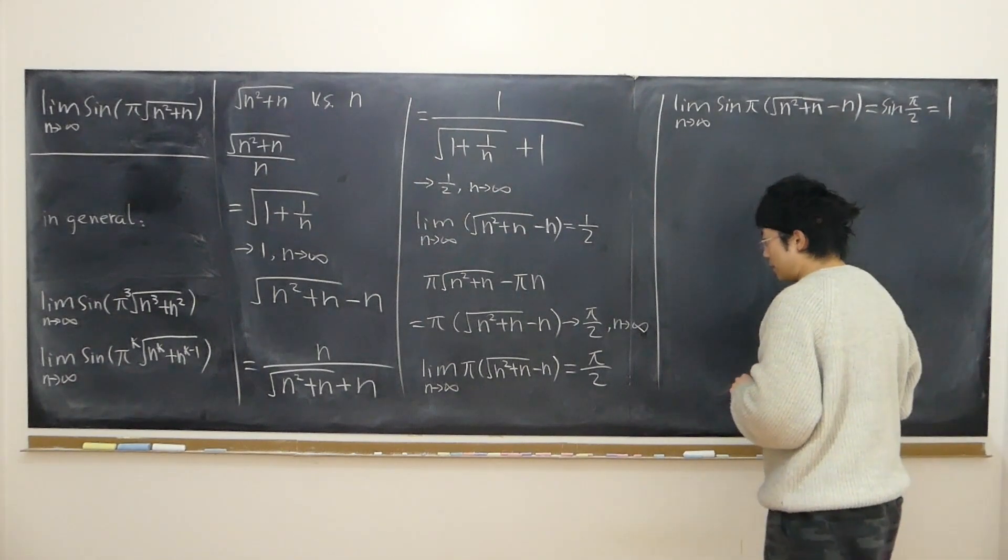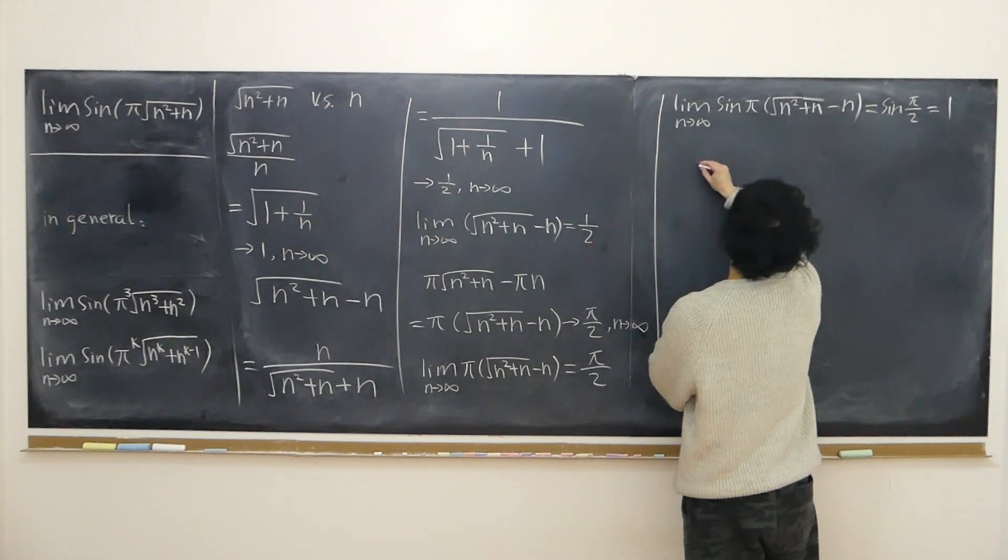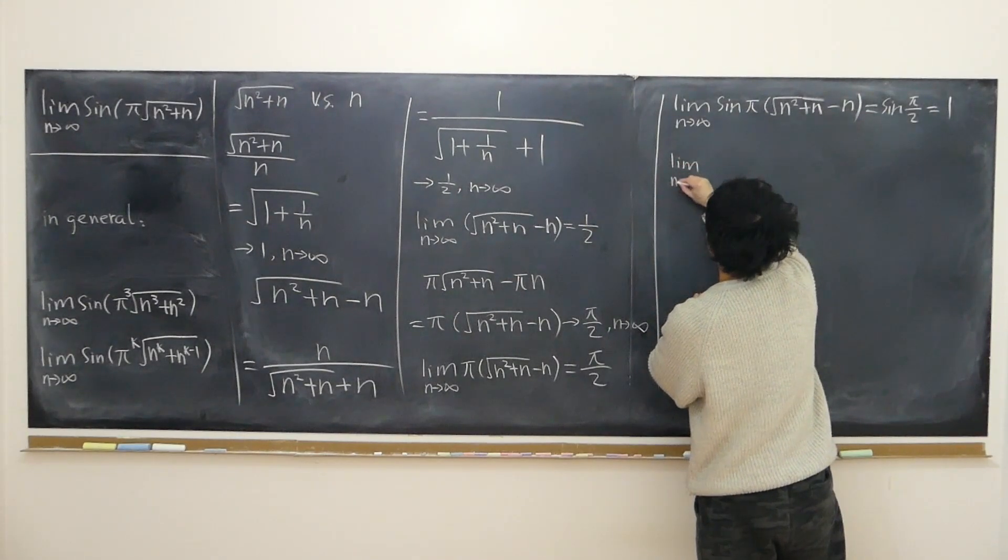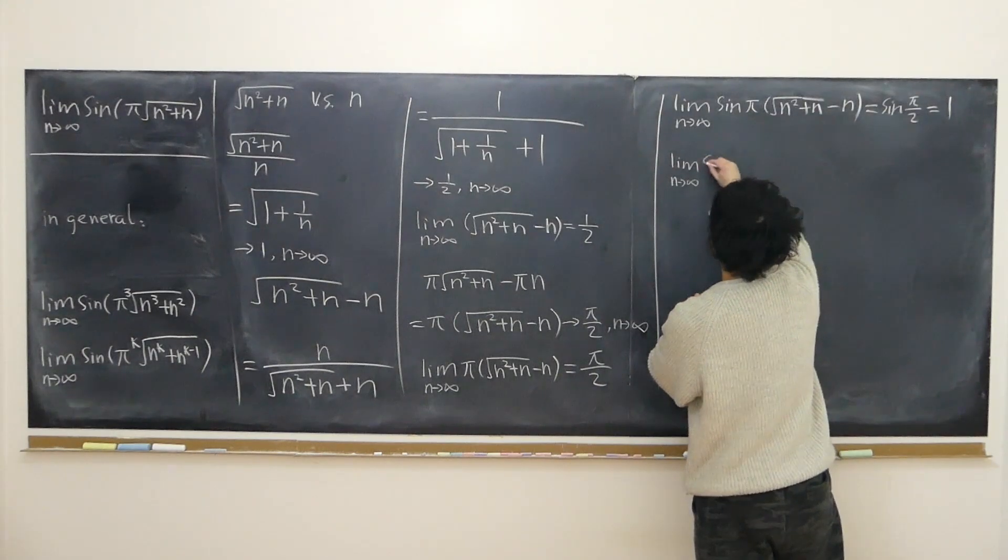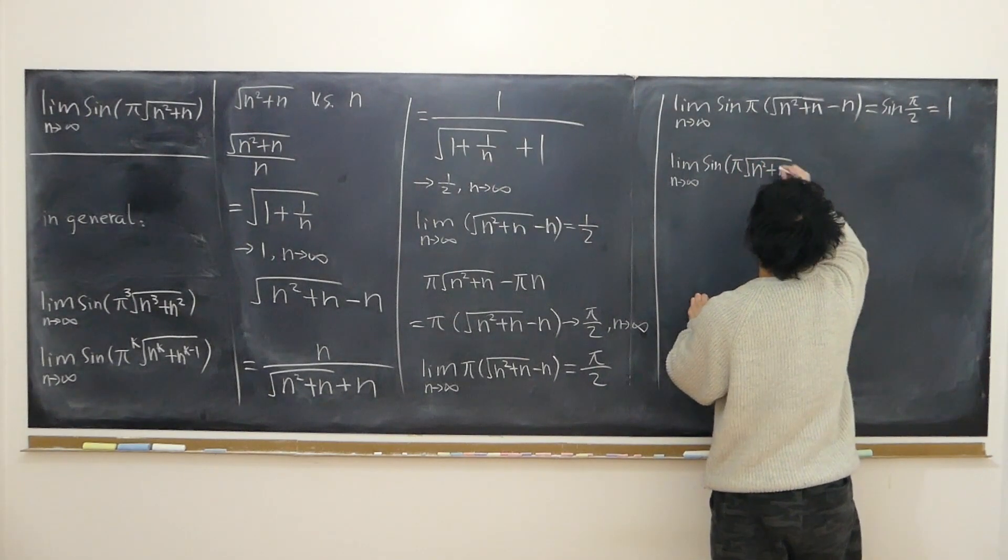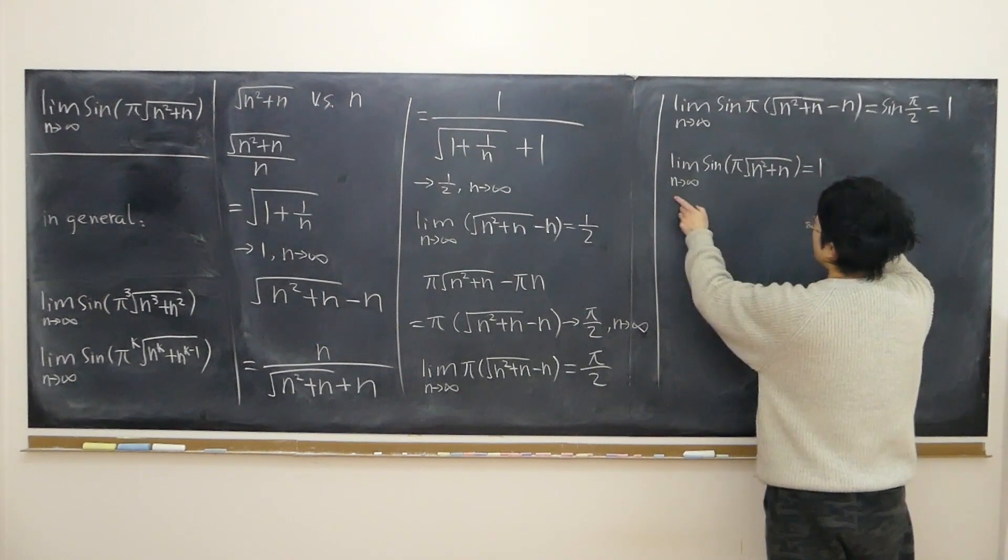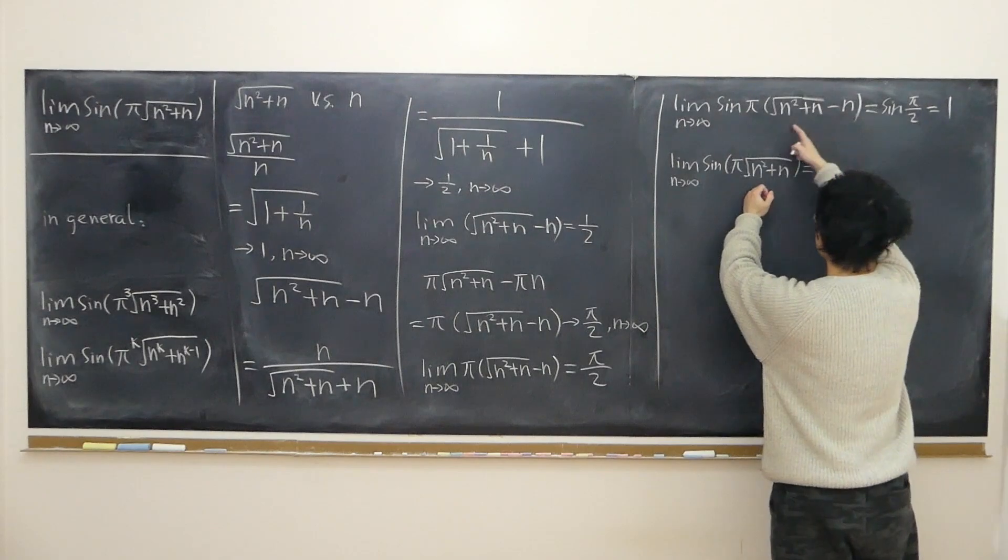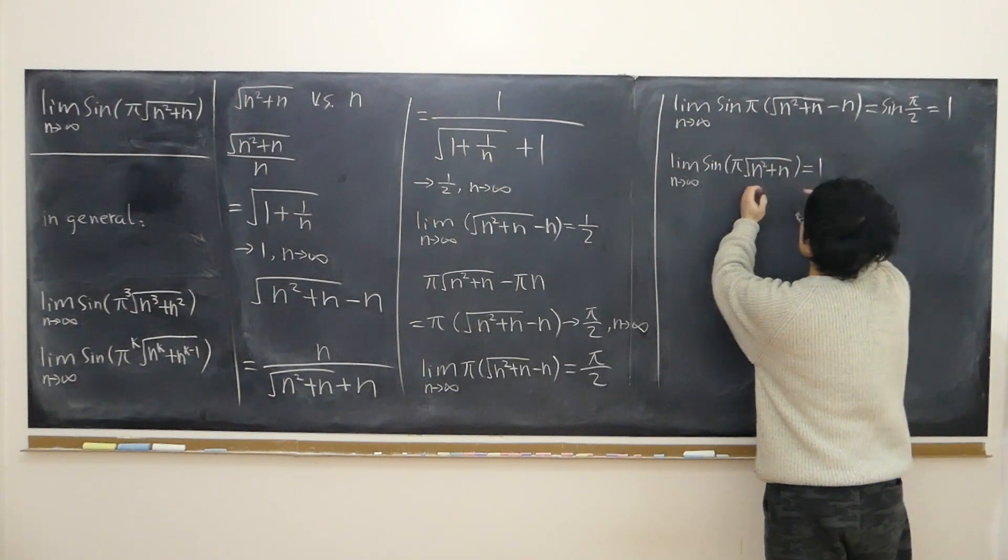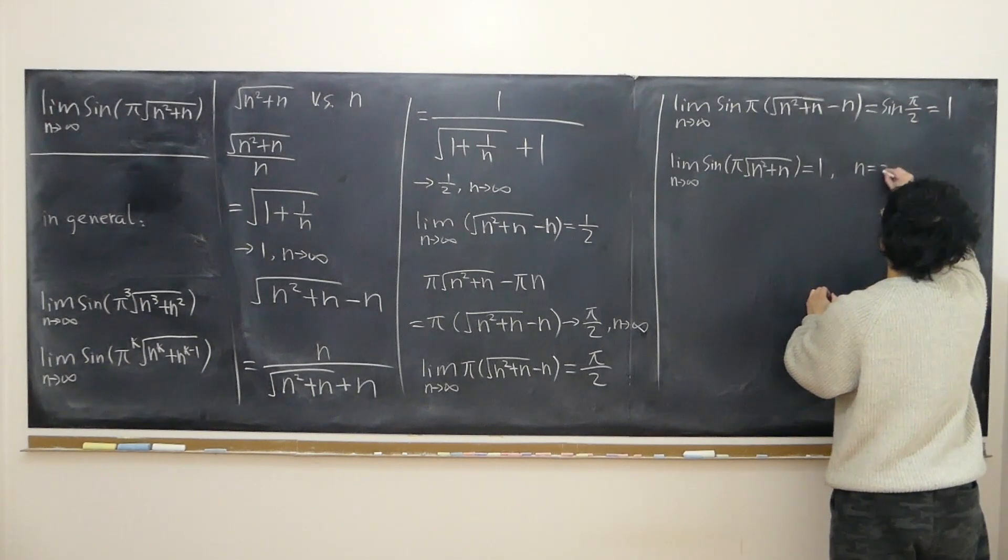Now, like I said, depending on n. If n is odd—but if n is even, then nothing changes. So the limit as n approaches infinity of sine of π times square root of n squared plus n is easily equal to just one when n is even. Because of the periodic function, n is some even number, so minus even multiple of π, nothing changes. Still approaches one when n is even.